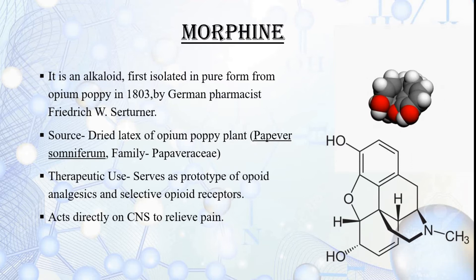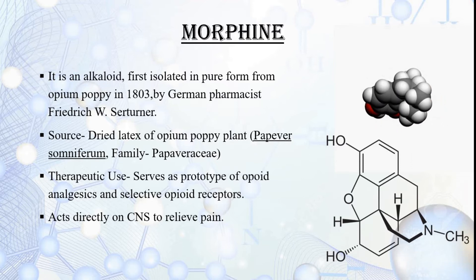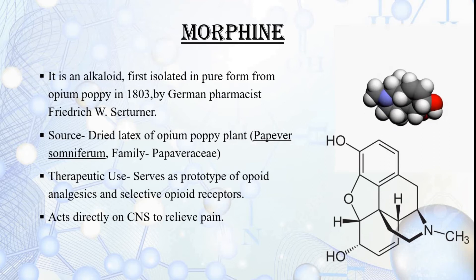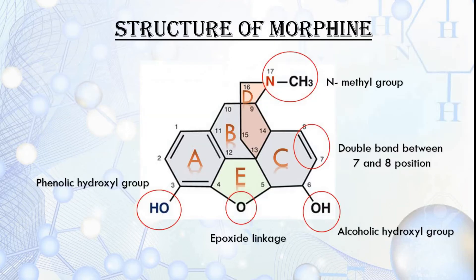Though morphine is an effective analgesic, it has a series of side effects that limit its use, like decreased respiratory effect, vomiting, and low blood pressure. Morphine is also addictive and prone to abuse.